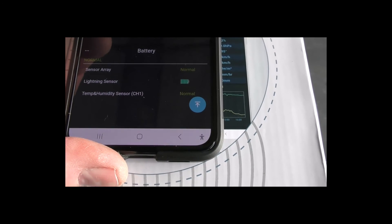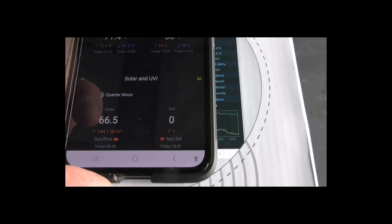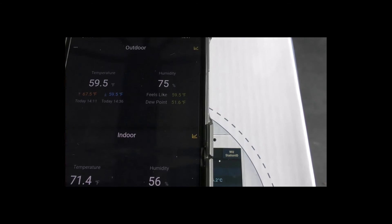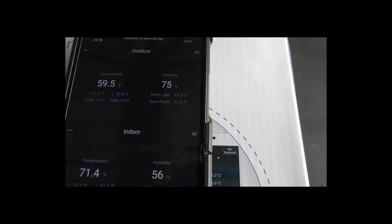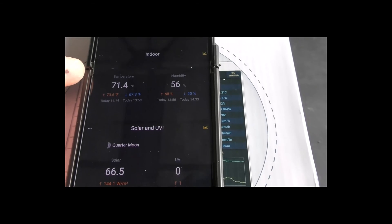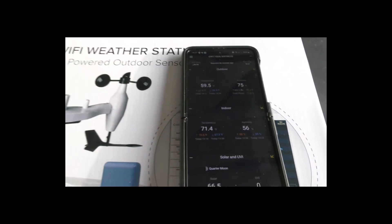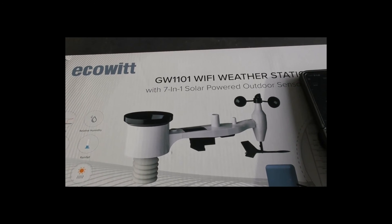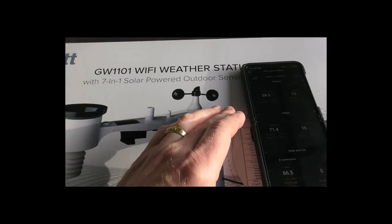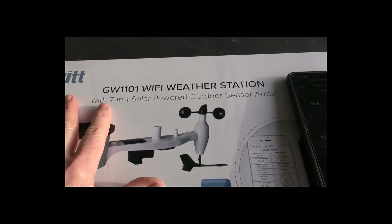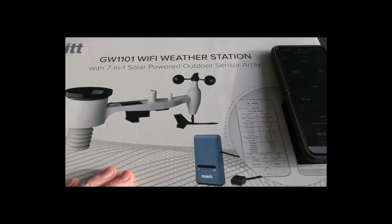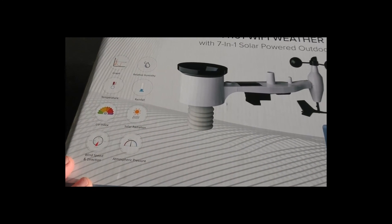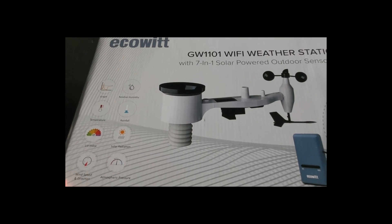We've got the battery array information - sensor array normal, lightning sensor fully charged, temperature and humidity sensor normal. Looking pretty good. I'll see if we can get that connected to Weather Underground. That was the Ecowit GW1101 Wi-Fi weather station seven-in-one, and I also bought the lightning sensor as well. I hope that was useful.